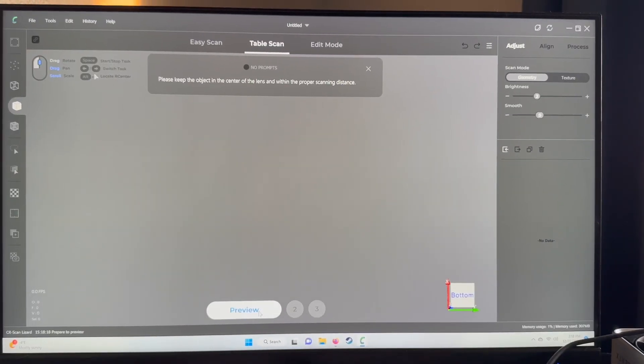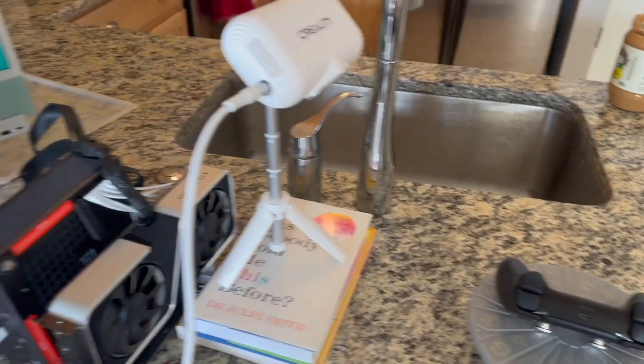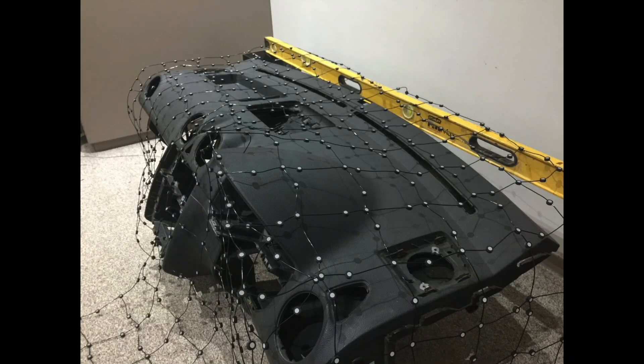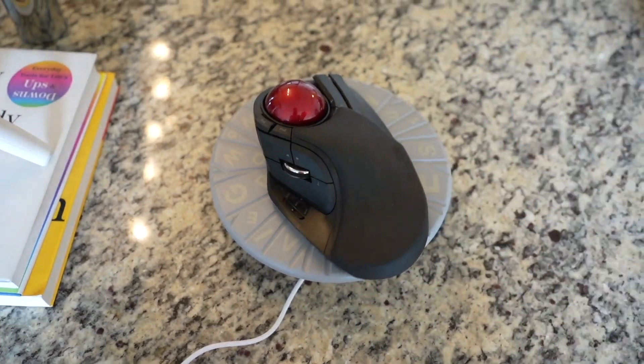You select your mode, select brightness, and then preview. You can scan black objects with this and you don't need to use those little stickers that you sometimes see thrown on objects that are being scanned. And you can see I'm doing this in a bright room, it's not very particular about the lighting conditions.